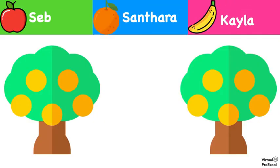Now let's do some practice problems. I want you to look at the pictures and tell me which fruit it would be. Would this be seib, Santara, or Kela? These are oranges. So, Santara.